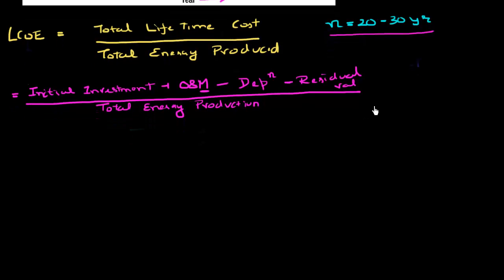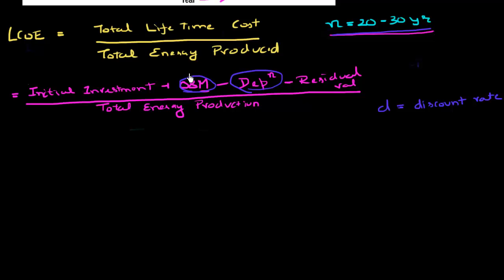Another term I'll use is the discount rate, denoted by D. The discount rate takes into account that cash flows — such as maintenance costs or depreciation — are happening in the future. Since I need to calculate the LCOE at the time I'm making the decision to build the power plant, I need to discount future cash flows to the present value, similar to discounted cash flow analysis used in finance.